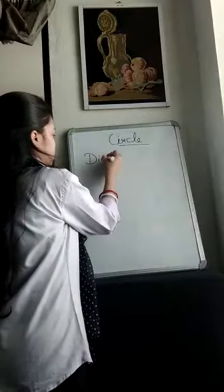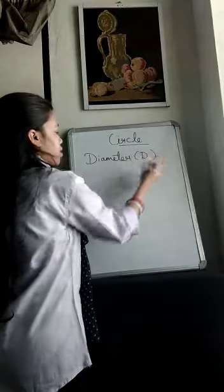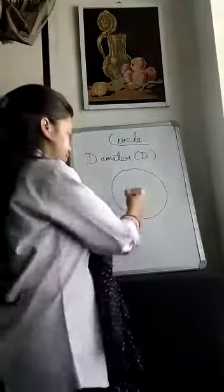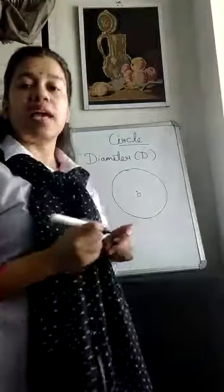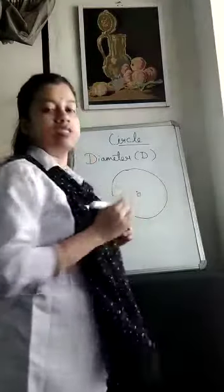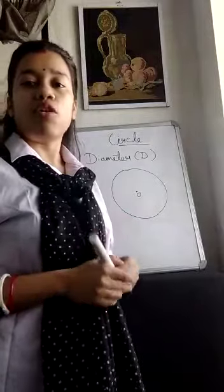Any line segment joining two points on a circle is called a chord. As you can see, two points A and B form a chord. Next is diameter. It is represented by D. First we draw the circle and make a fixed point O. A chord which passes through the center of the circle and joins two points on a circle is called diameter.